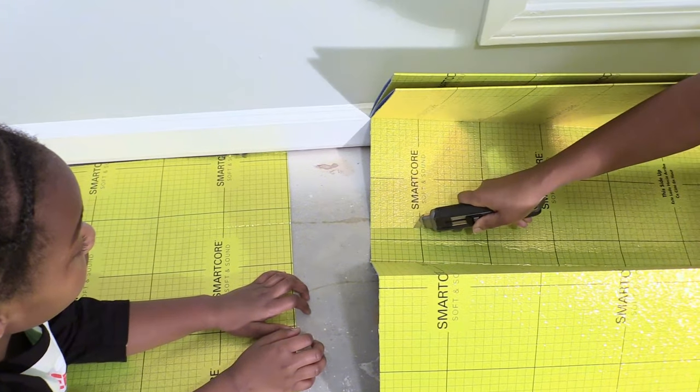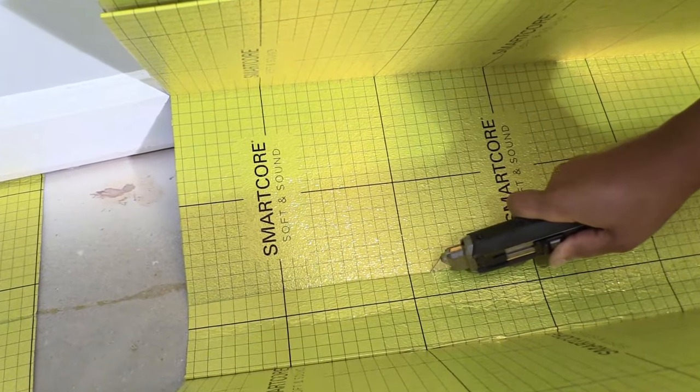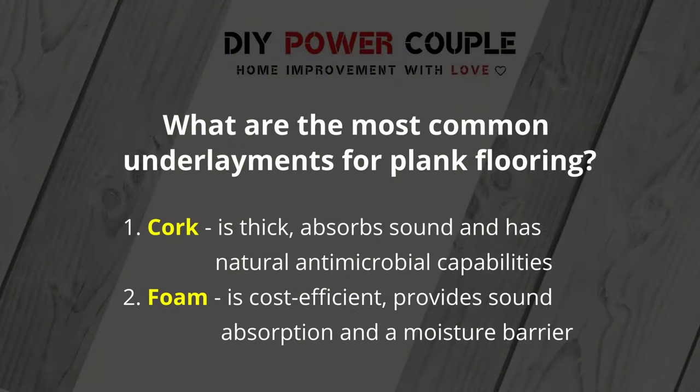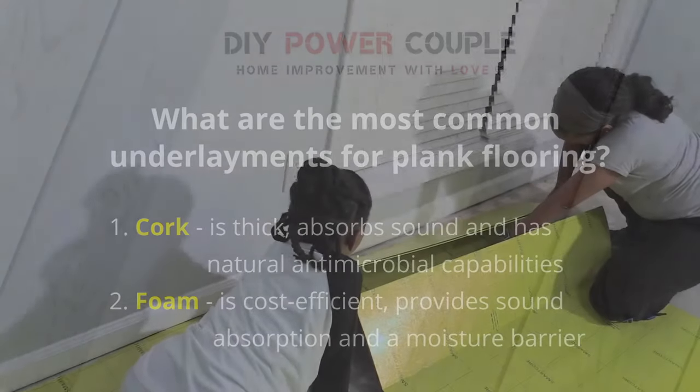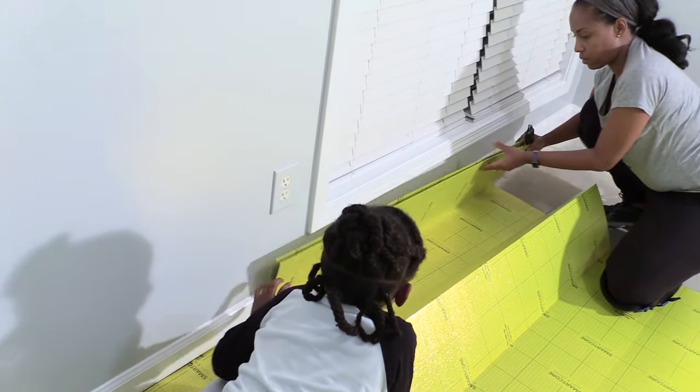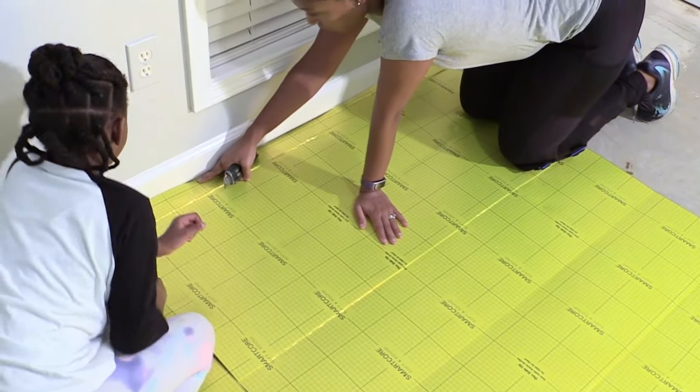When you have a sharp utility knife, it feels like your hand just glides over the lines to cut the insulated foam. We were able to quickly remove the cut pieces and line up the row.